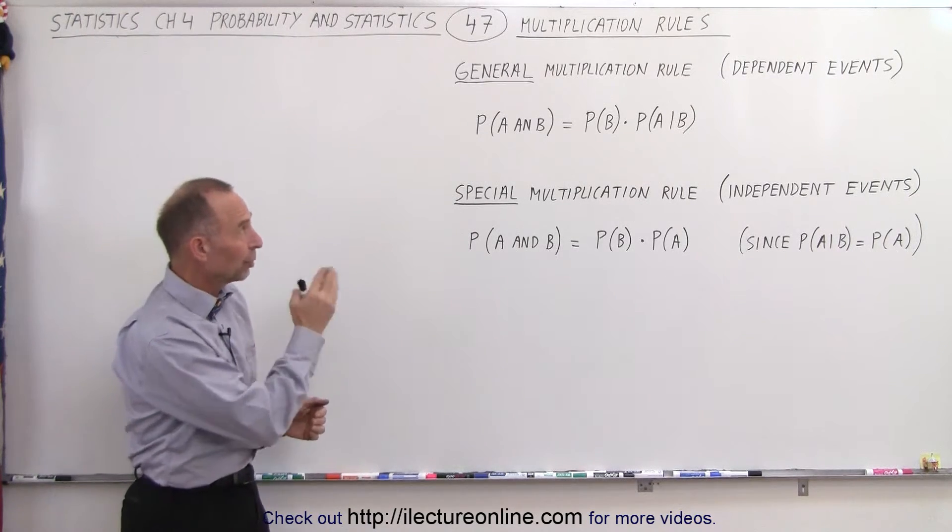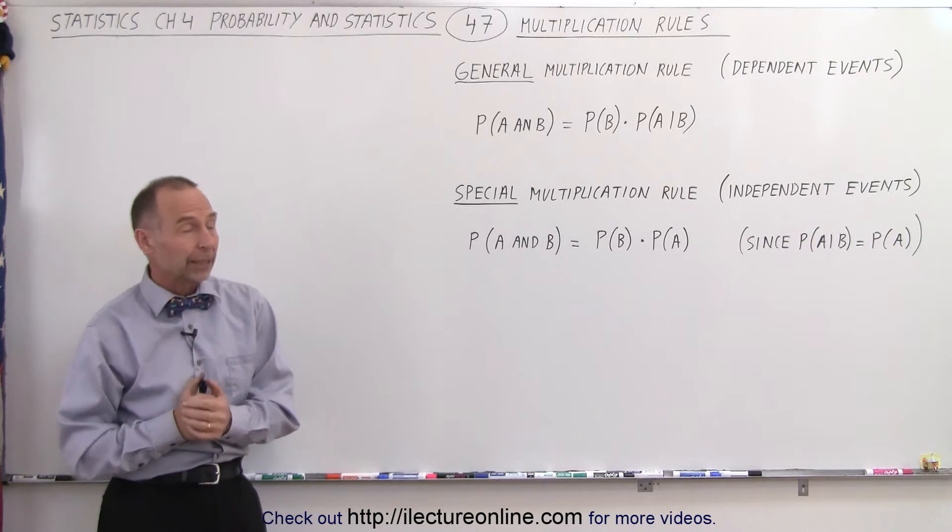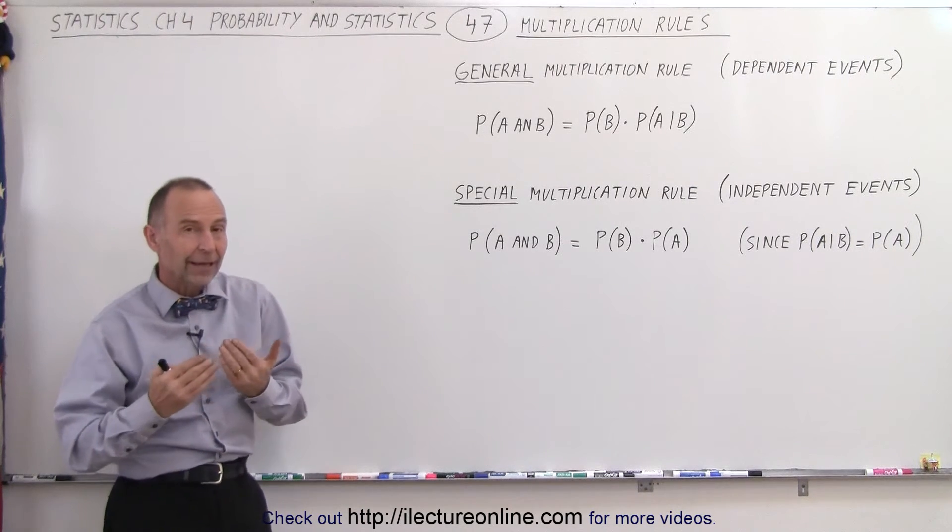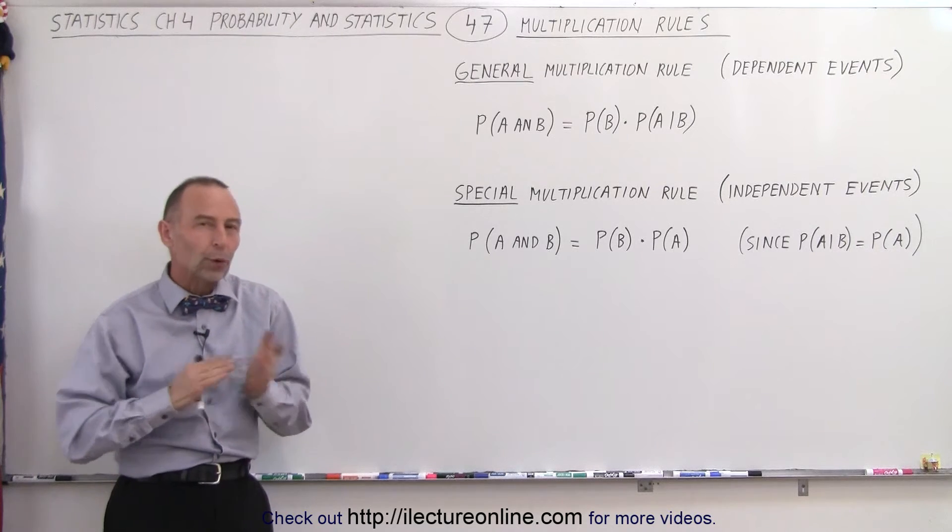We have what we call the general multiplication rule and the special multiplication rule, and it has to do with whether the events are dependent or independent.